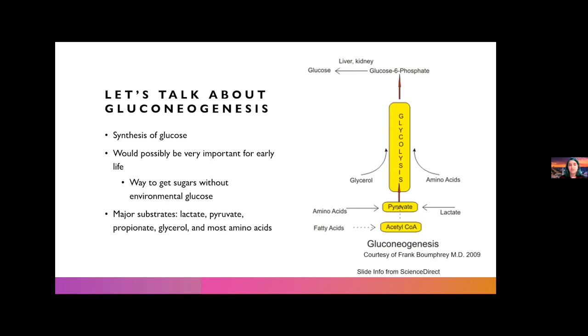The major substrates in gluconeogenesis are lactate, pyruvate, propionate, glycerol, and most amino acids. And you can see on the side here, the general path that it takes, where glycolysis would be going down from glucose to pyruvate in order to make the energy, and instead we're taking pyruvate and making it into glucose.